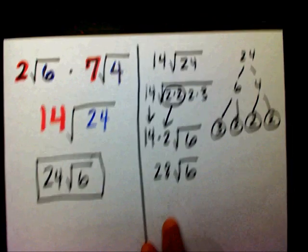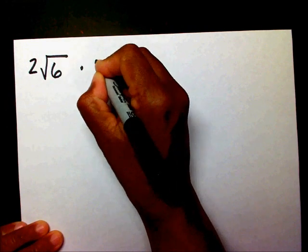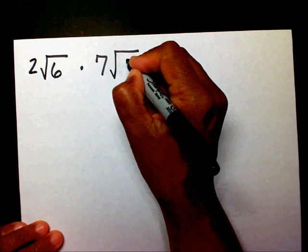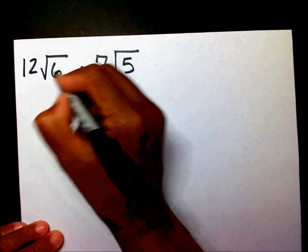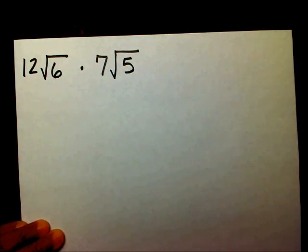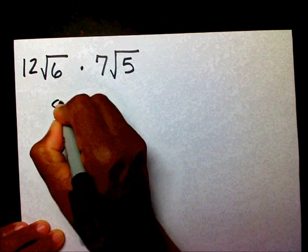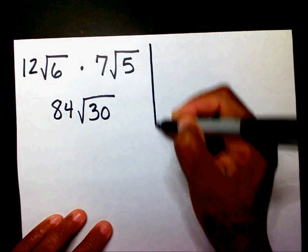Let's look at another one. I have 12 radical 6 times 7 radical 5. So, I'm going to multiply 12 times 7. Well, 12 times 7 is 84. And 6 times 5 is 30.